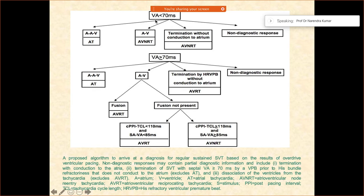First of all, if the VA interval is less than 70 milliseconds, this is a very important and very nice algorithm. If it tends to terminate without conducting to the atrium, definitely it is AVNRT.